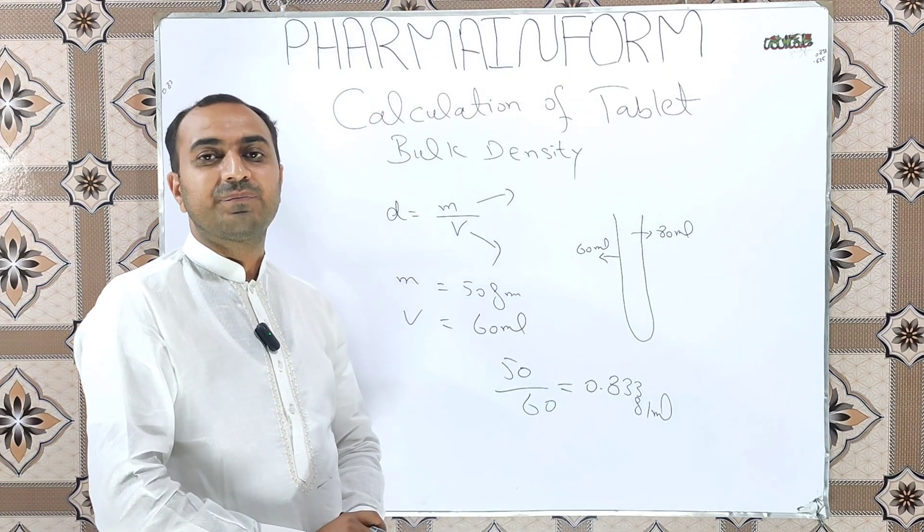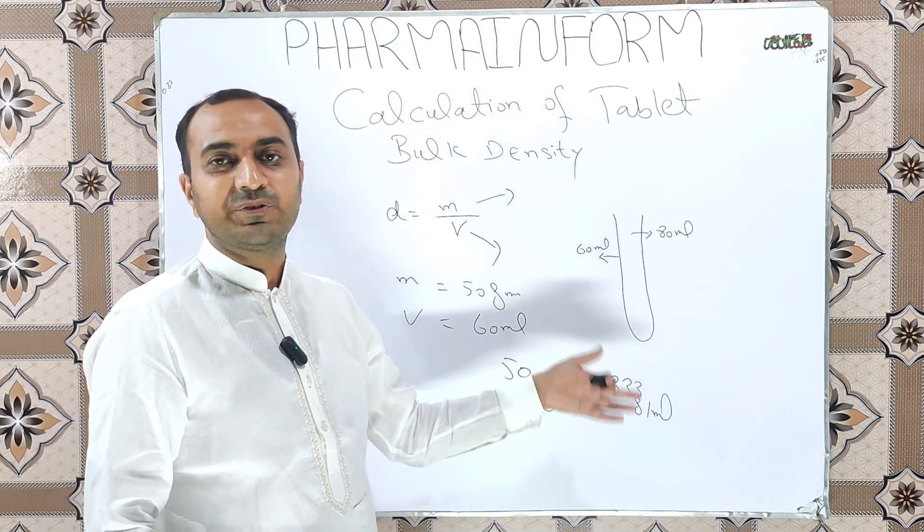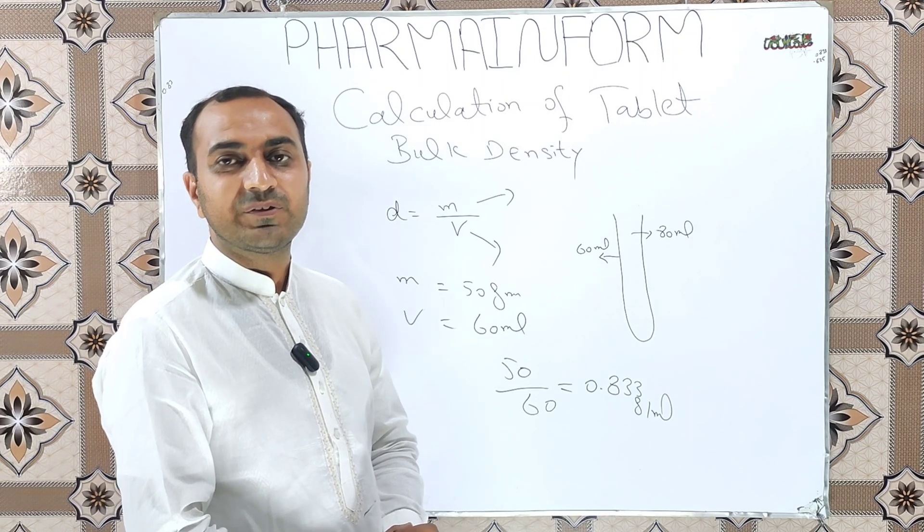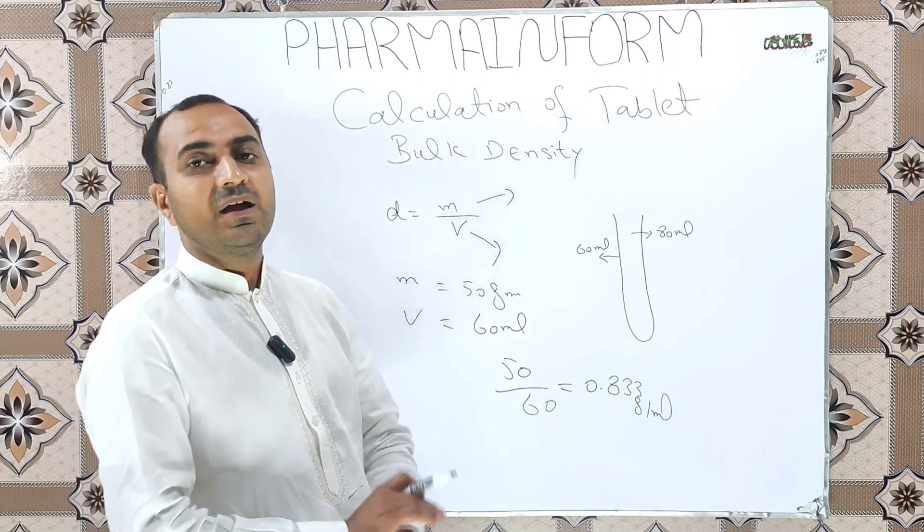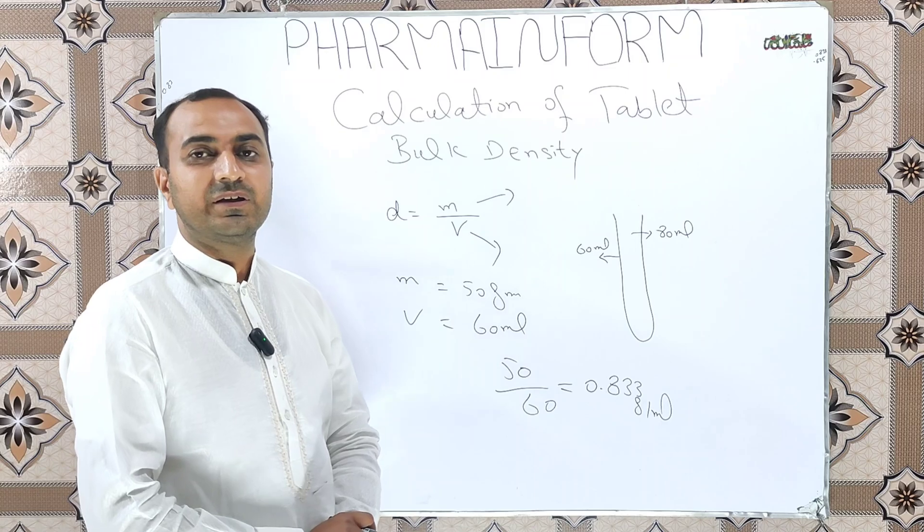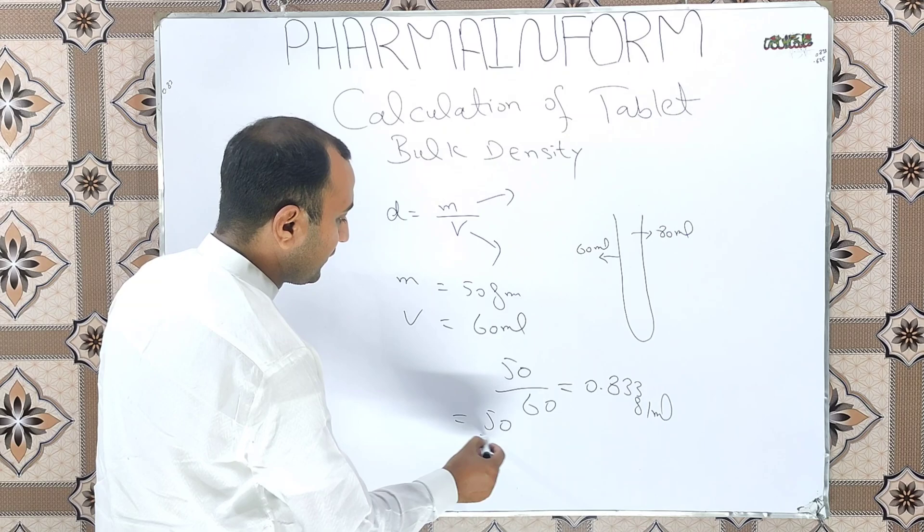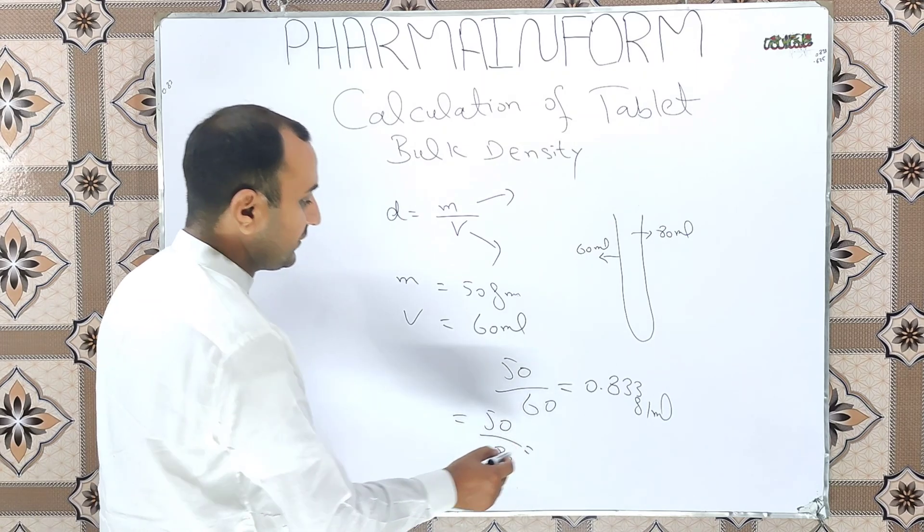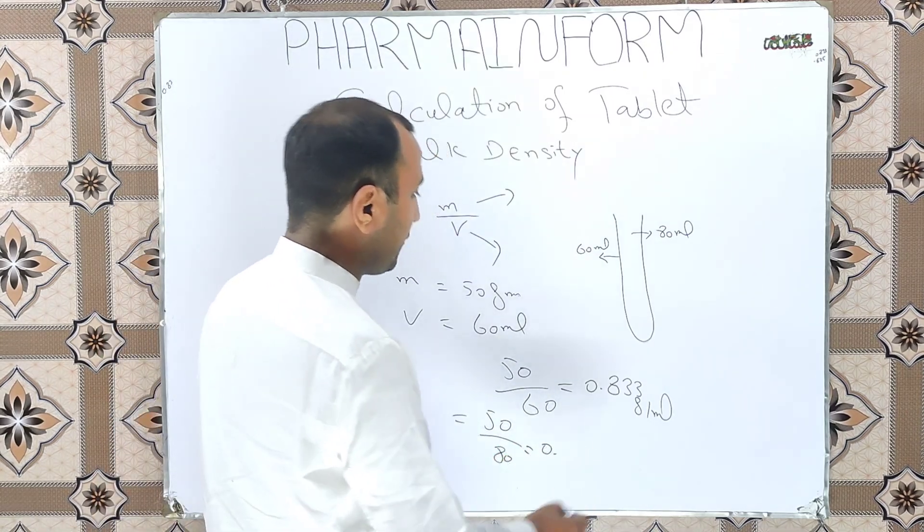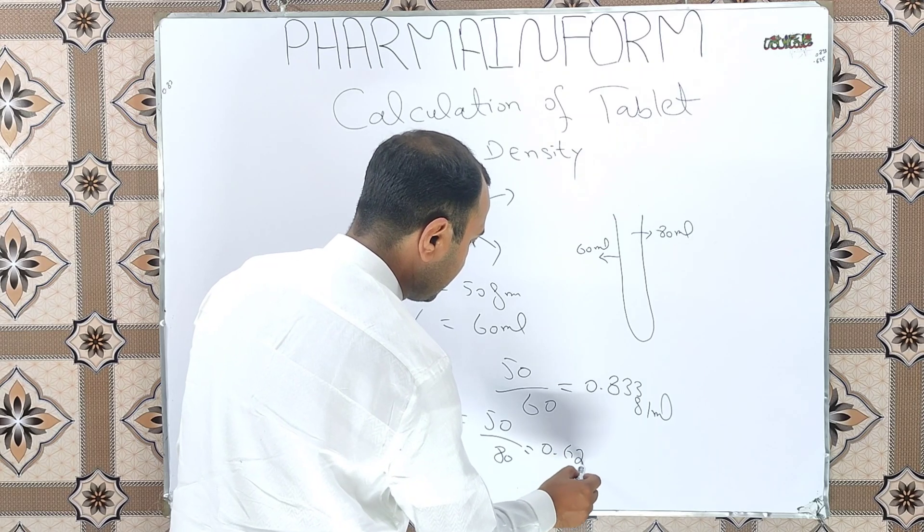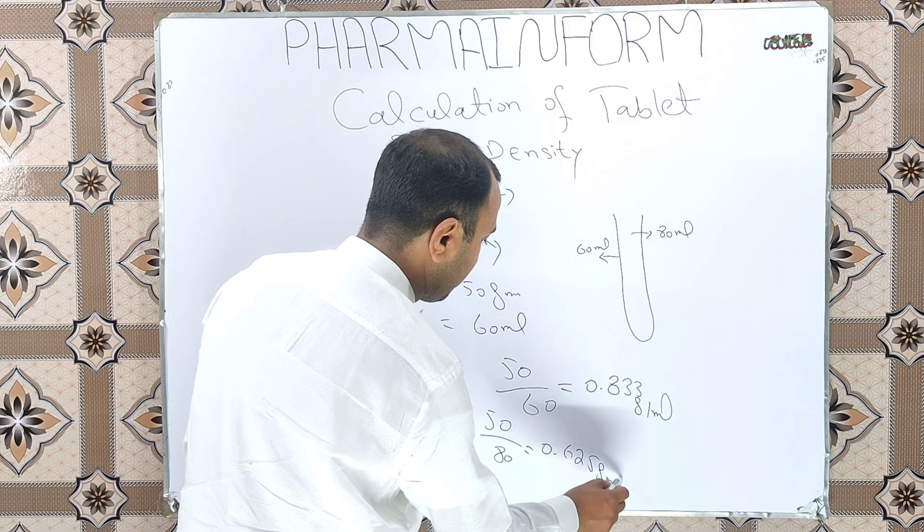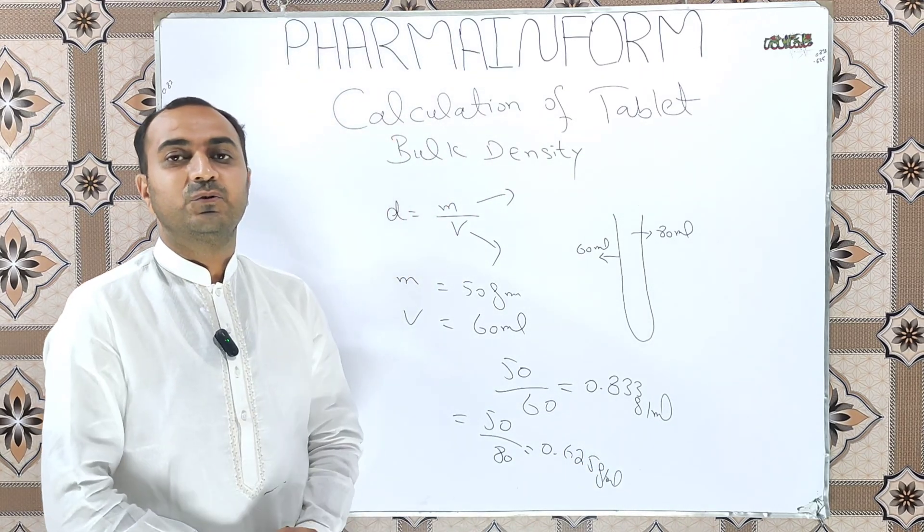In the round shape small tablets, void spaces are covered up more precisely compared to large size tablets. So in case of large size tablets, our density will be equal to 50 over 80 equals 0.625 gram per ml.